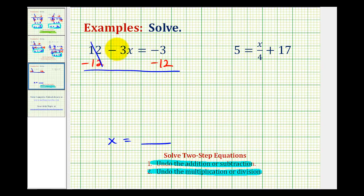So this would be zero and we're left with negative three times x equals negative three minus 12, which we could write as negative three plus negative 12, but the result is going to be negative 15.